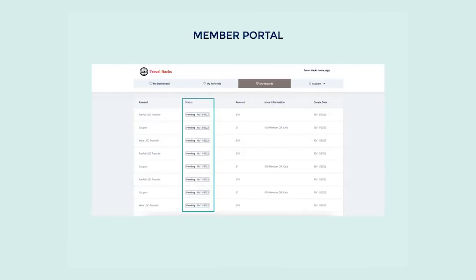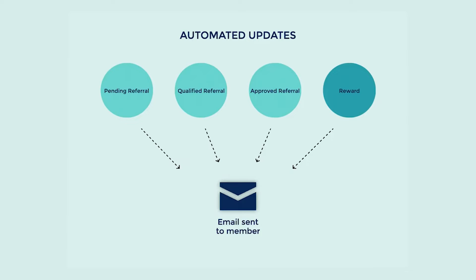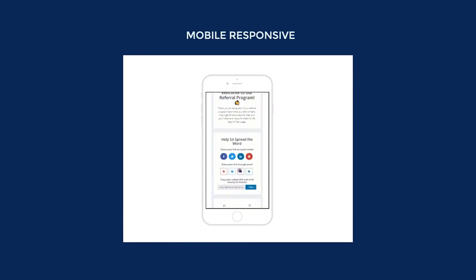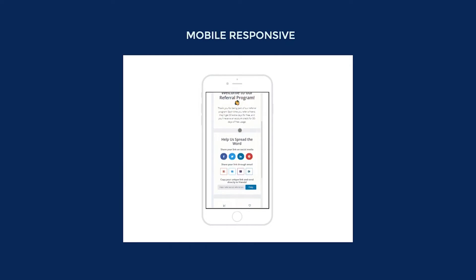And just like with referrals, the member portal will keep the member informed about all of their rewards that they've earned and their fulfillment status. The really great thing is that members don't even have to actually log into their portal in order to stay updated and informed. Through automated emails triggered at important referral and reward milestones, your members will immediately know about new and updated referrals, gain access to their rewards, and be encouraged to continue participating. The member portal isn't solely a desktop experience either — the entire portal and our referral pages are mobile responsive.